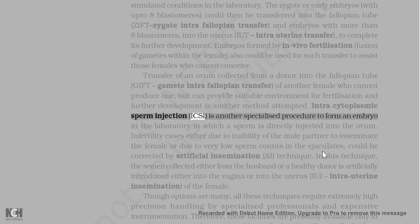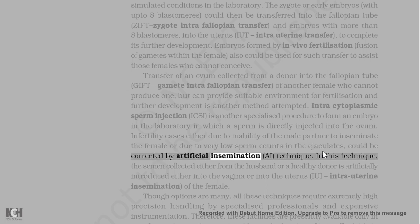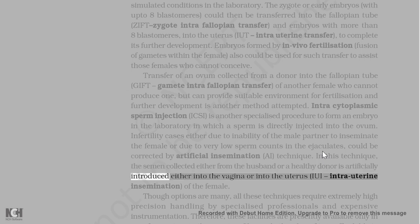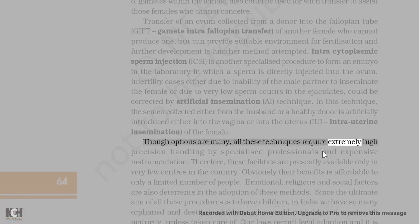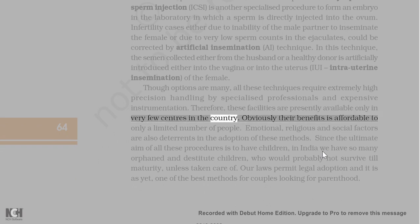Intracytoplasmic sperm injection (ICSI) is a specialized procedure to form an embryo in the laboratory by directly injecting a sperm into the ovum. Infertility due to inability of the male partner to inseminate the female, or due to very low sperm counts, can be corrected by artificial insemination (AI), in which semen collected from the husband or a healthy donor is introduced into the vagina or into the uterus (IUI — intrauterine insemination) of the female. These techniques require extremely high precision handling by specialized professionals and expensive instrumentation, and are presently available only in very few centers in the country, affordable to only a limited number of people.